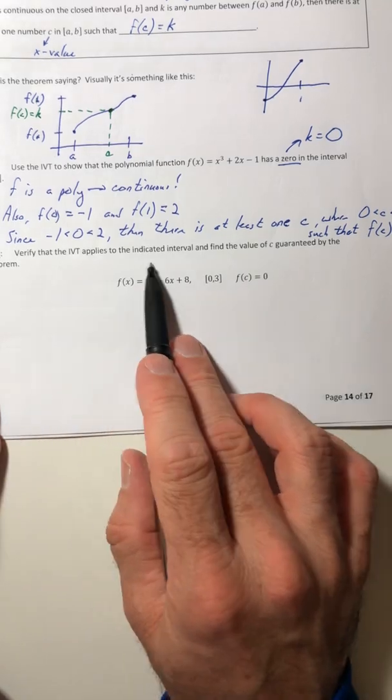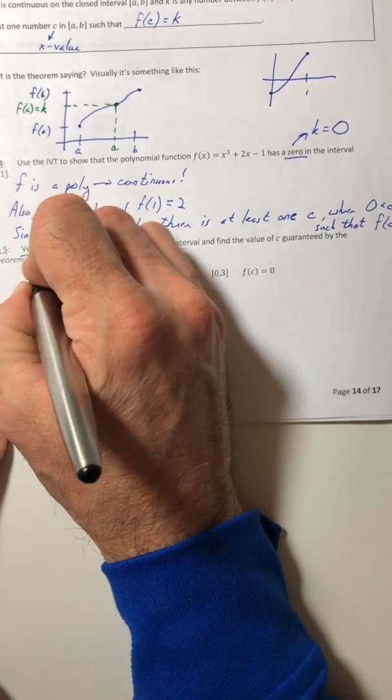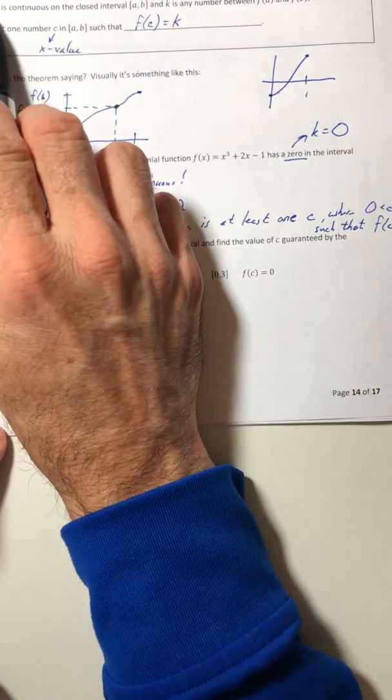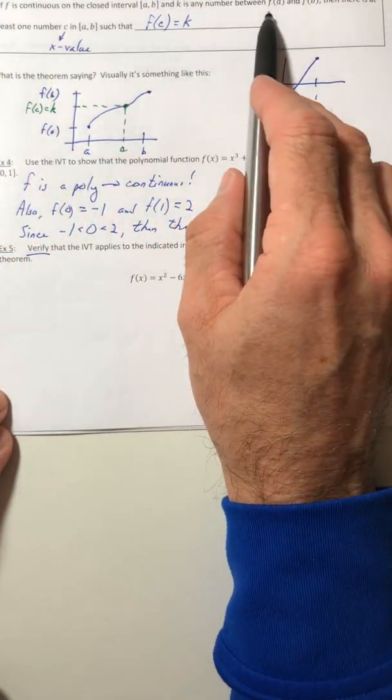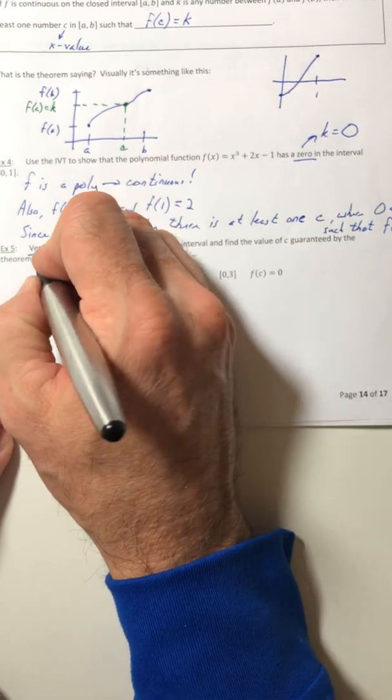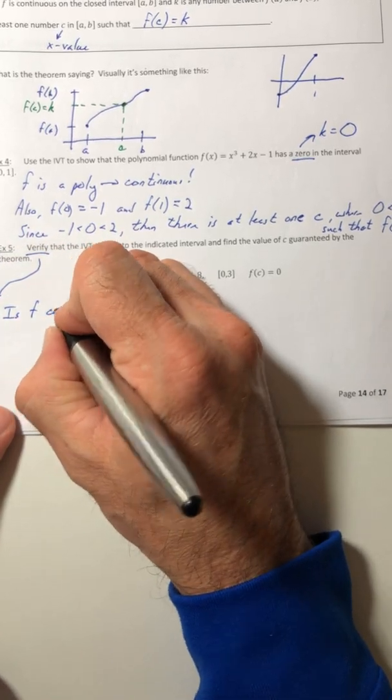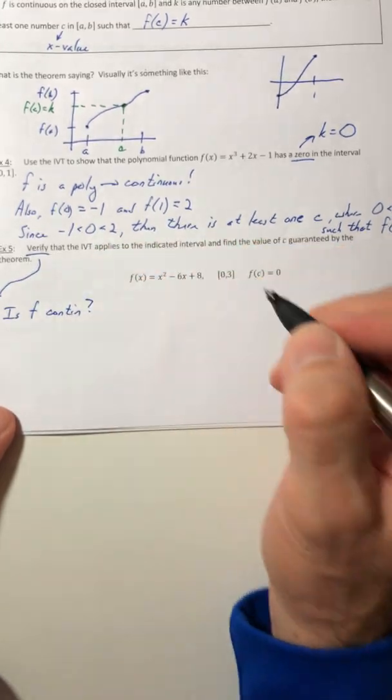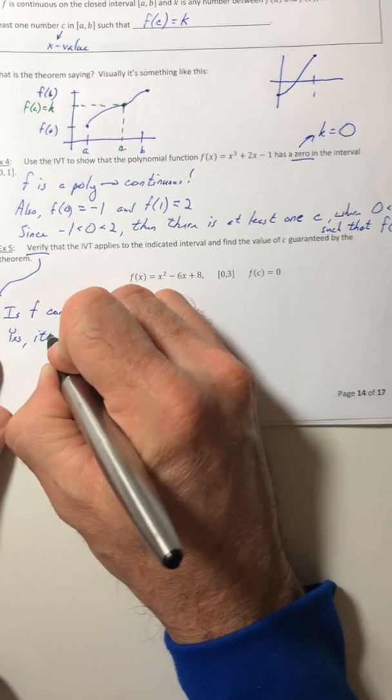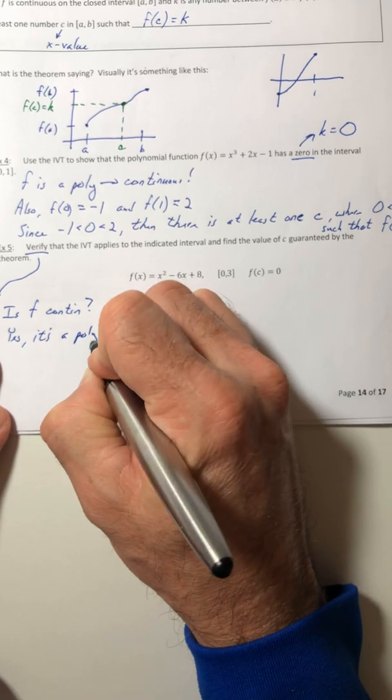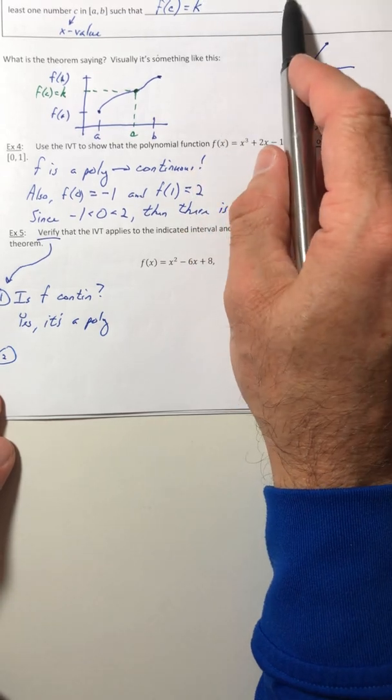Part five. Verify that it applies, and then find the value of c guaranteed by the theorem. So if it says verify, that means you have to do two things. You have to show that the theorem is going to hold. So you've got to show that the function is continuous, and that k is between f(a) and f(b). So is f continuous? Well, yes. It's a polynomial. Number two is the k between f(a) and f(b).